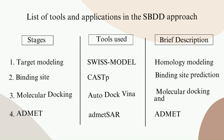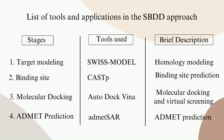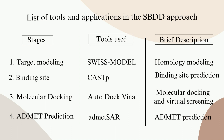The most popular tools for the SBDD approach include Swiss Model, which enables homology modeling used in target modeling. CAST-P is a common tool used for binding site prediction. Autodock Vina is used in molecular docking and virtual screening. Another important tool used in SBDD is ADMET-SAR for ADMET prediction.